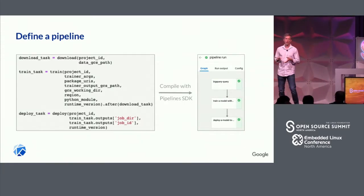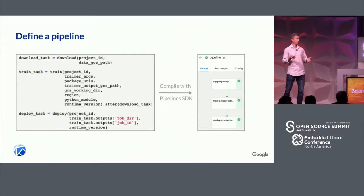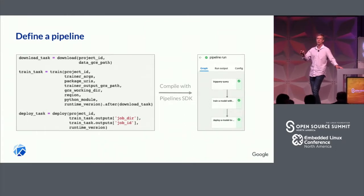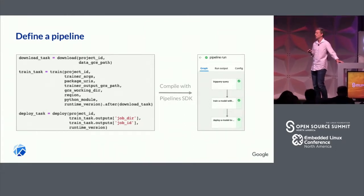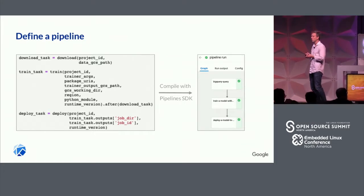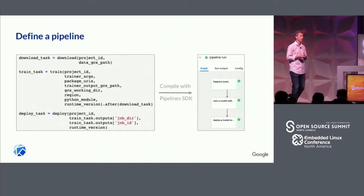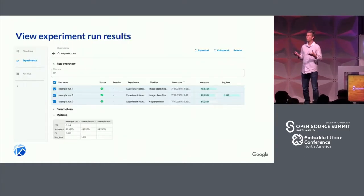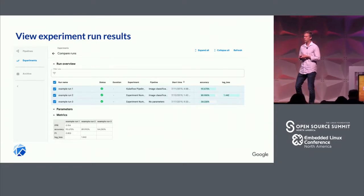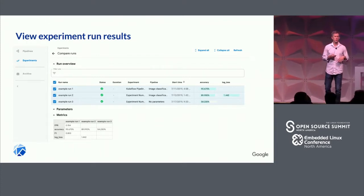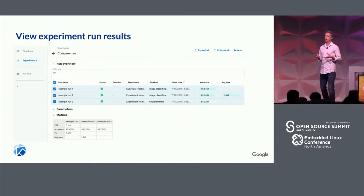Here's an example of a pipeline written in Python — this is actually something I used in a recent blog post for retraining a model. As new data comes around, it will do a three-step process to download the new data, retrain a model, and then redeploy it. There's a Pipelines SDK that converts that into a GUI in the Kubeflow dashboard, so you can see what's going on. This all comes together when you look at the results of your experiment, where you can see all the different runs that you've made, the accuracy, whether it was successful, and so on. You can even add your own metadata to each run to track what's going on.